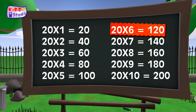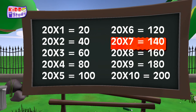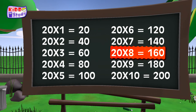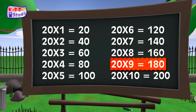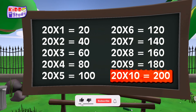20 sixes are 120, 20 sevens are 140, 20 eights are 160, 20 nines are 180, 20 tens are 200.